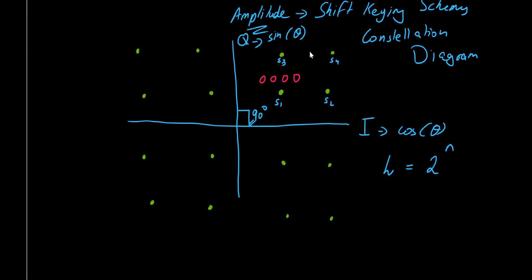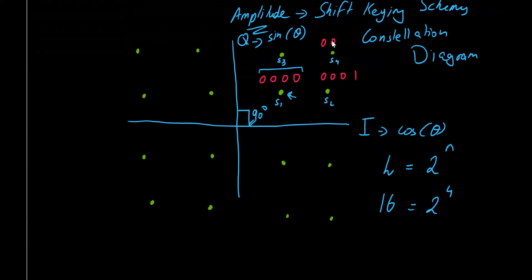The constellation diagram can have L number of symbols, dependent on the number of bits n. Currently we have 16 dots, meaning 16 symbols, and the number of bits needed to identify 16 symbols is 4 bits. So four bits identify one given symbol. The neighboring symbol s2 is '0001', s4 is '0011', s3 is '0010'. On the lower side, we have '0100', '0101', and so on, using a Gray code arrangement.